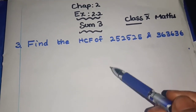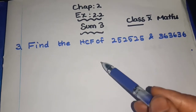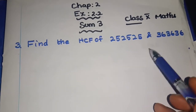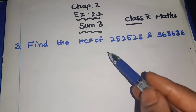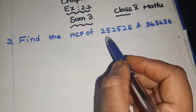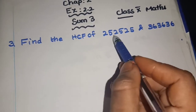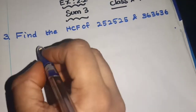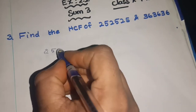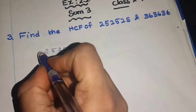Using prime factorization, we have to use the L-division method and write the prime factors in powers. Then we can find the HCF. So first, we have to find the prime factors of the first number. I am taking 252525 in the L-division method.